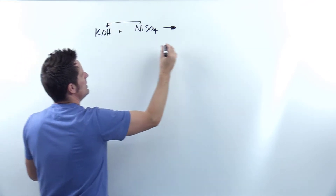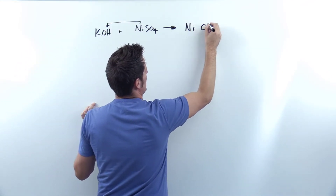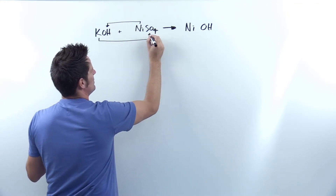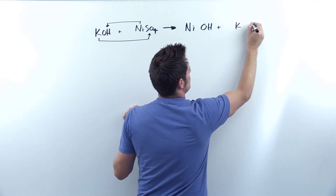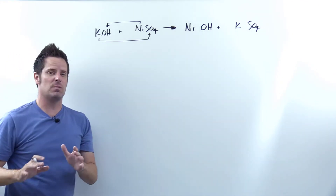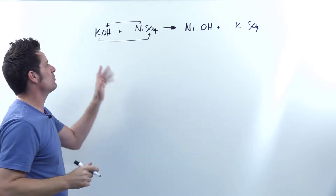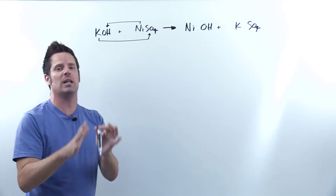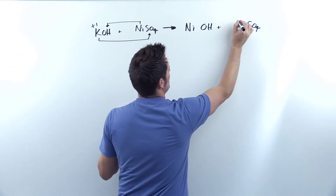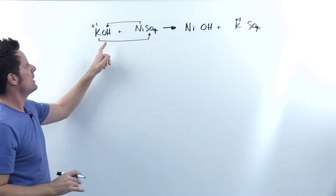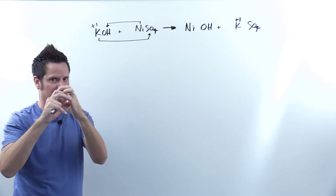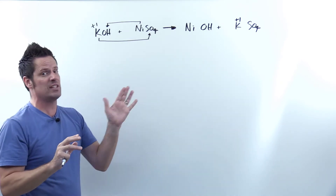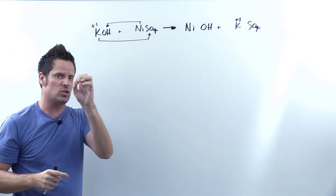So what's going to happen here is they're going to do a partner swap. The nickel is going to go together with the OH. So I'm going to initially just write down nickel OH, and I do not bring along any subscripts when I move it over to the right. Separately, K is going to go together with the sulfate. So I'm going to write down plus K sulfate. Now I'm not done yet — I now need to analyze these and determine if any subscripts are required. In order to do that I have to identify the charges. This is a double displacement metathesis reaction, so I can just treat OH as one unit.